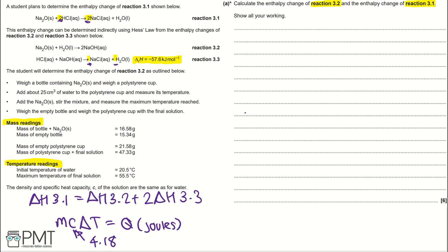If we start by working out the mass of Na₂O using our mass readings, we would do 16.58 minus 15.34. Typing that into the calculator, we get 1.24 grams.